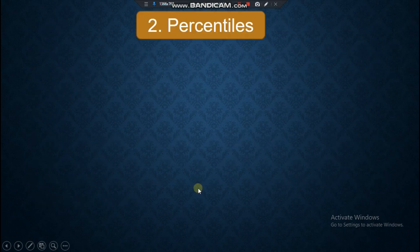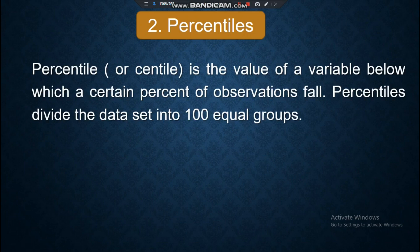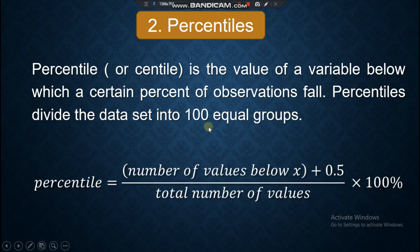Now let's have the second one: percentiles. Percentile or centile is the value of a variable below which a certain percent of observations fall. Percentiles divide the data set into 100 equal groups. The formula for percentile is: percentile equals the number of values below x plus 0.5 all over the total number of values times 100%.